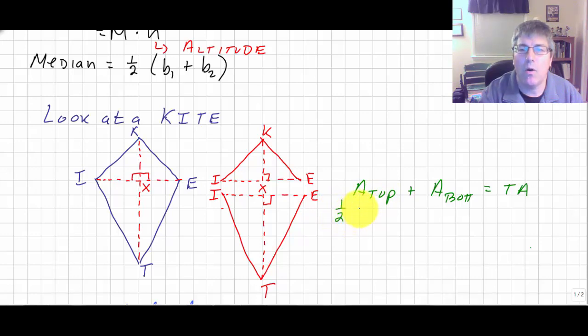And the area of the top triangle, then we could calculate that—that's just going to be one-half KX, one-half height times the base IE. That would be the area of the top triangle. Then we could divvy it up and we could find the area of the bottom triangle—that's one-half TX times, and again, my same base IE.